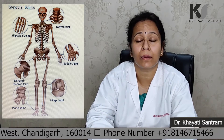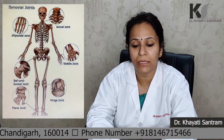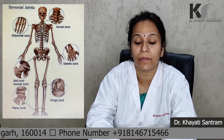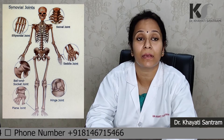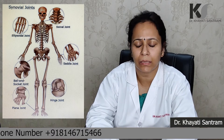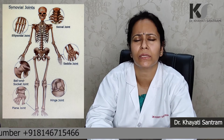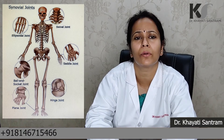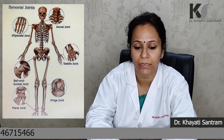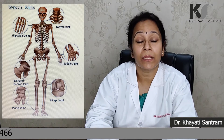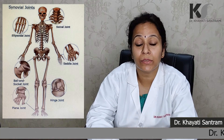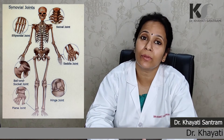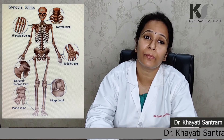Cartilaginous joints are divided into primary cartilaginous and secondary cartilaginous joints, which are known as synchondrosis and symphysis. Synovial joints are further divided according to the axis of movement.